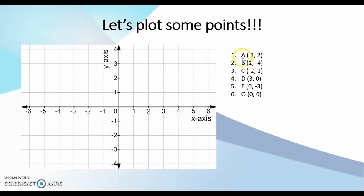A is our point (3, 2). So I start at my origin and I move three units to the right on my x-axis, followed by two units upwards on my y-axis. So my point A actually lies here.